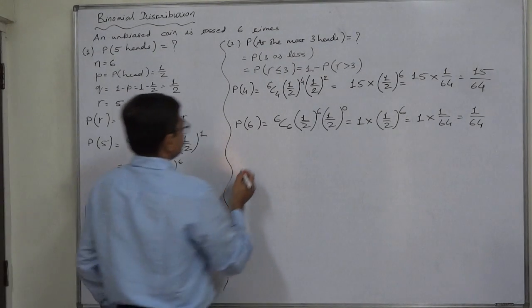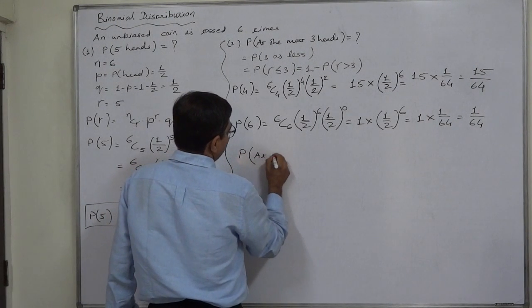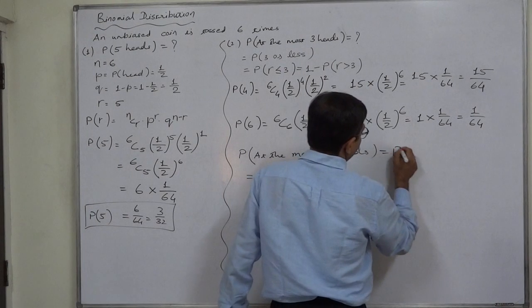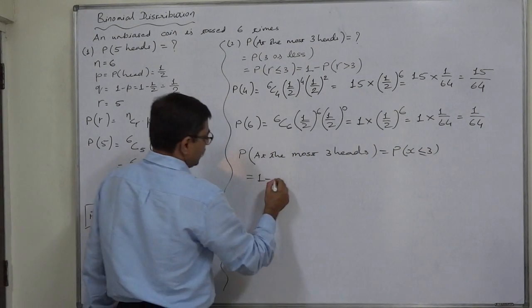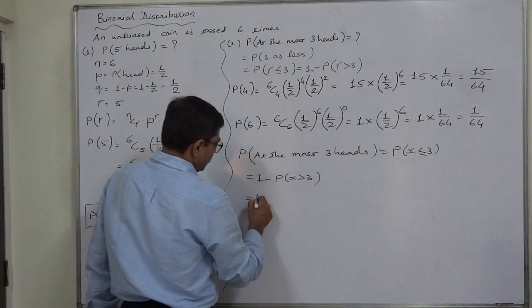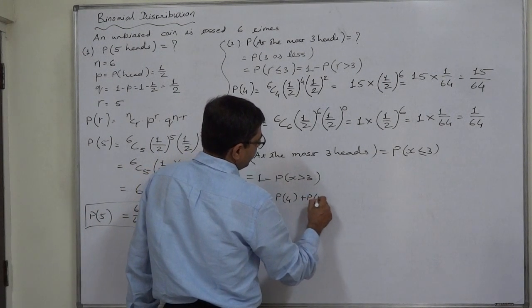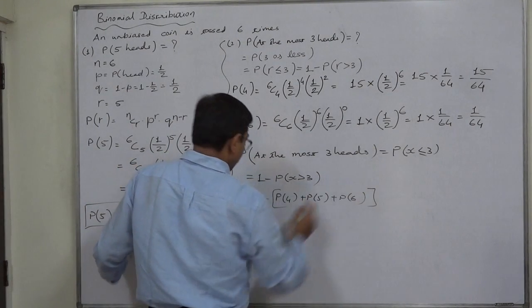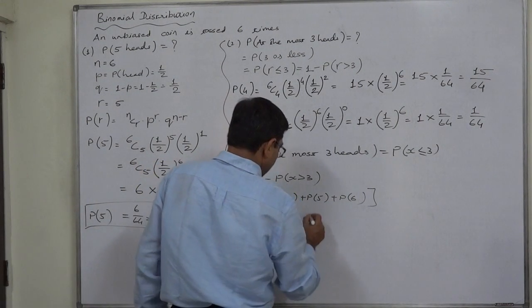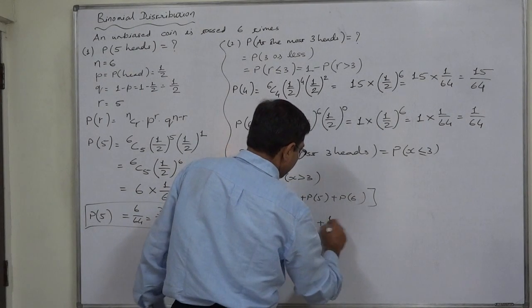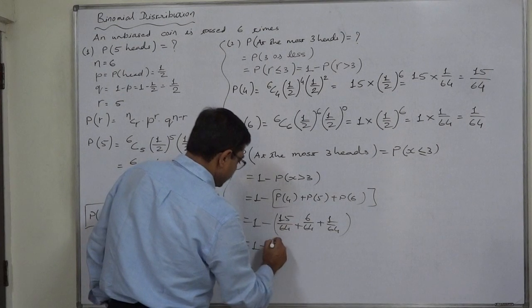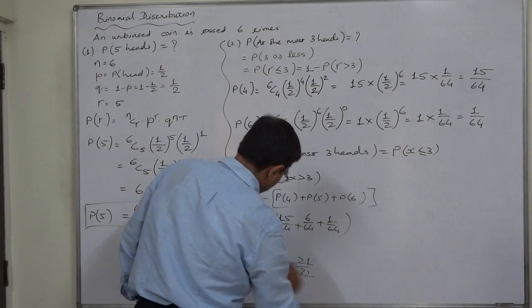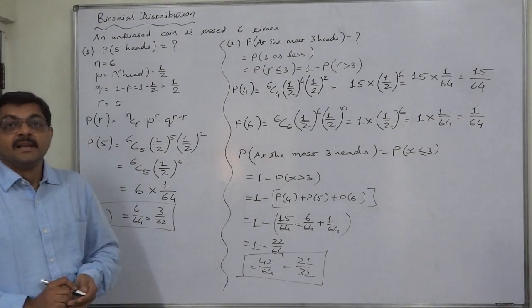So ultimately, P of at the most three heads equals to one minus P of X greater than three. That is one minus P of four plus P of five plus P of six. That is one minus fifteen by sixty-four plus six by sixty-four plus one by sixty-four. So ultimately it is one minus twenty-two by sixty-four, which is forty-two by sixty-four or twenty-one by thirty-two. This is the final answer. That's it, thank you very much.